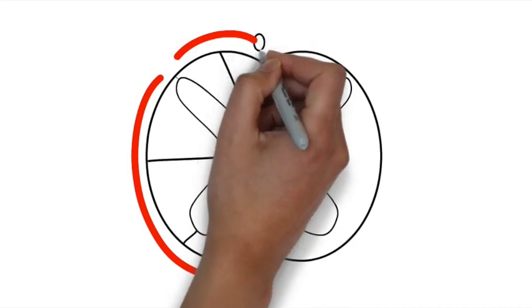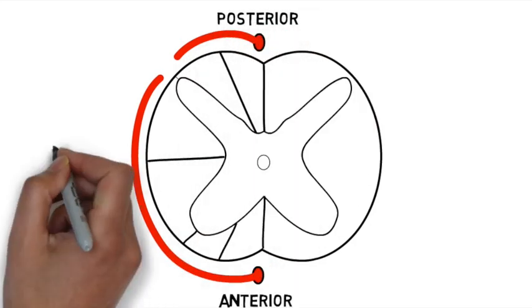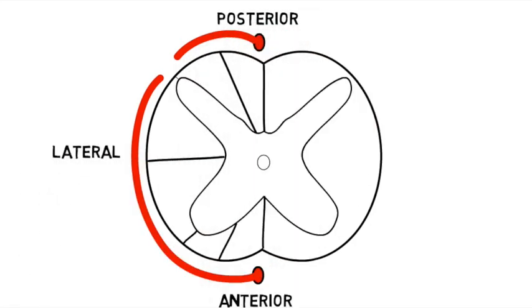Next, draw the anterior and posterior spinal arteries and label it anterior, posterior and lateral. So next, label the segments.